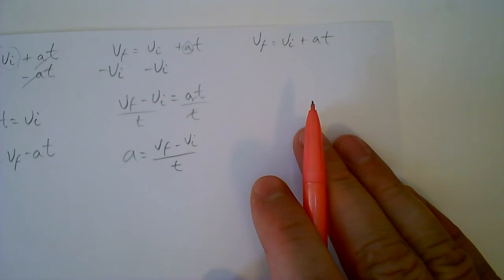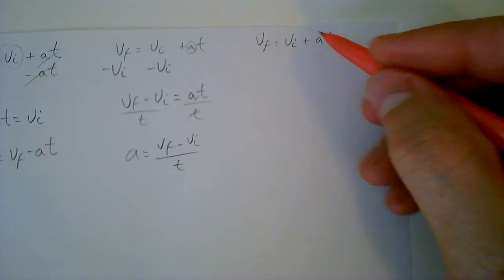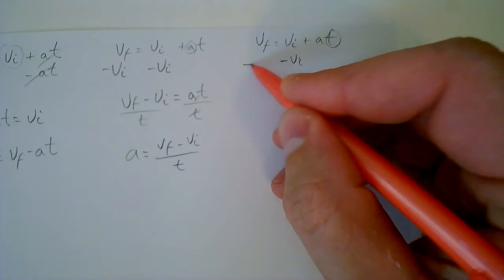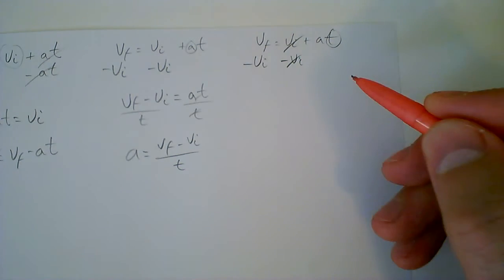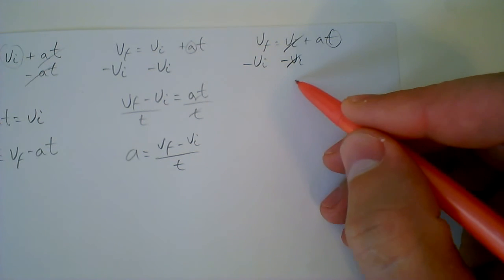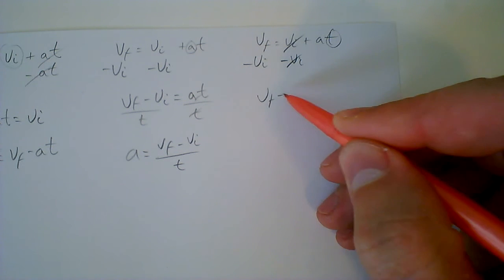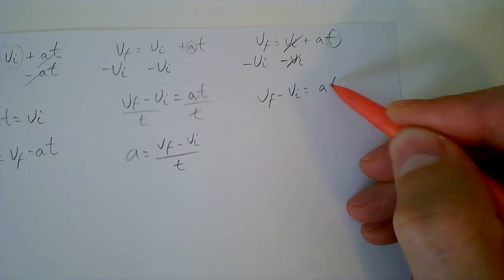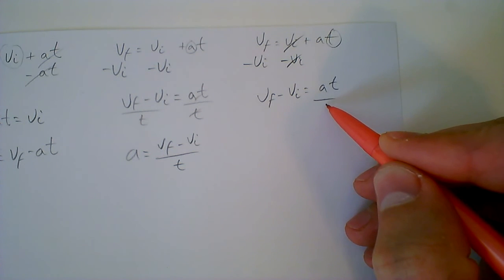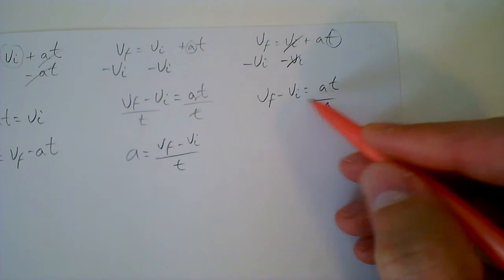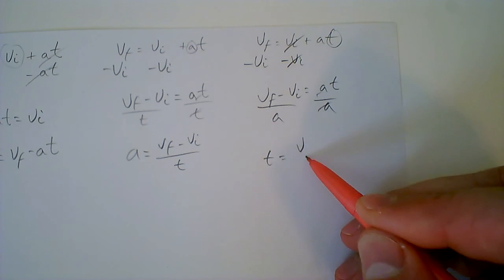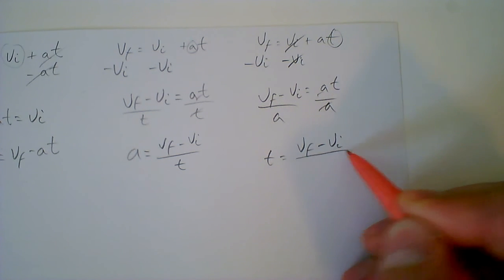And then lastly, if I'm trying to rearrange this one for T, it's practically the same thing as the last. Subtract the VI from both sides, get rid of that, you end up getting VF minus VI equals AT. Divide out the A in this case, and you get T equals VF minus VI over A.